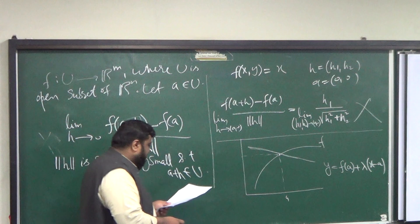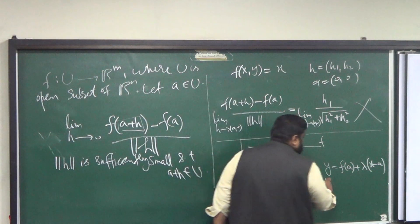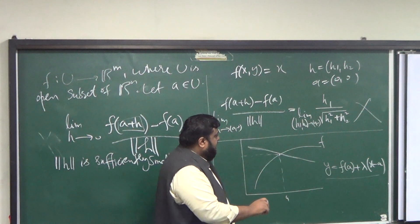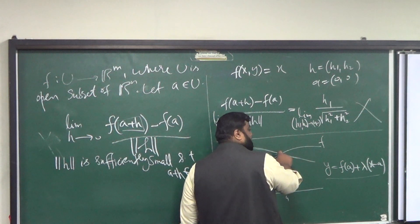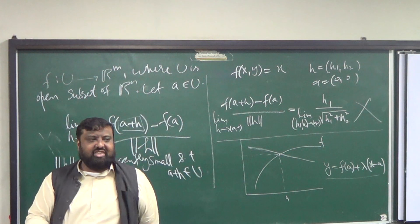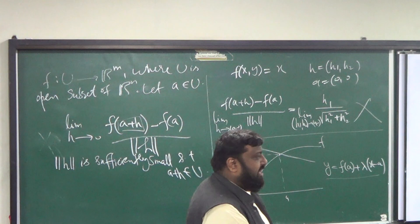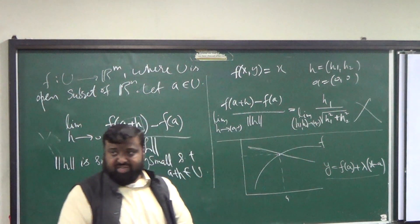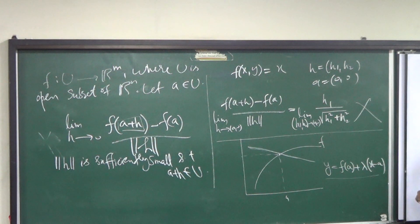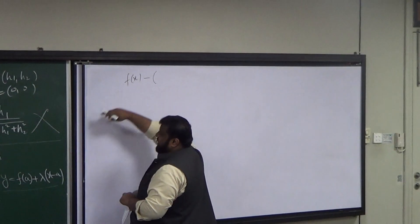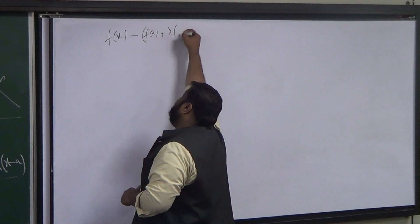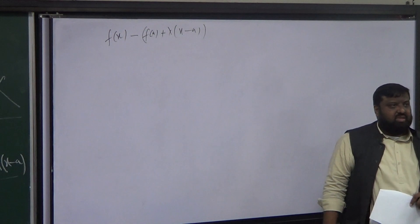What I'd like to know is: can this line approximate the curve locally? If you want to approximate the curve locally at this point through this line, you need to take the difference and think about the error, and try to make the error as small as possible. So let's take f(x) and subtract this Y equation — F of A plus lambda times x.